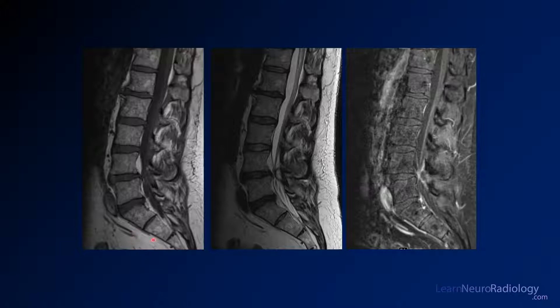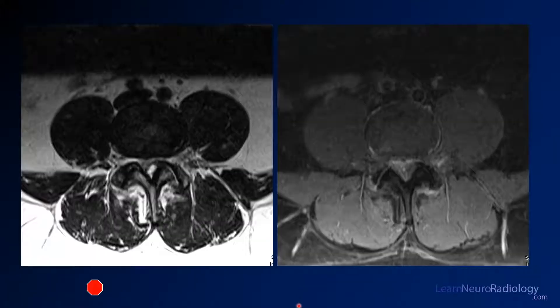This is a T1, this is a T2, this is a T1 post contrast. Here you see axial images through the region of abnormality.